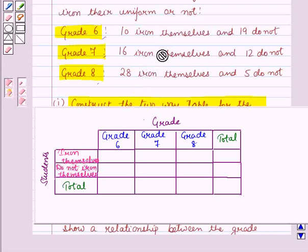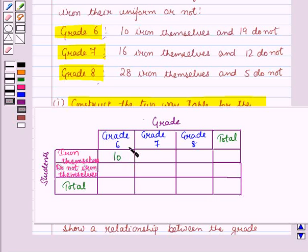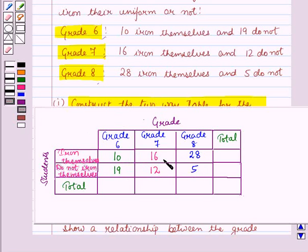Now in grade 6, 10 iron themselves and 19 do not. In grade 7, 16 iron themselves and 12 do not. And in grade 8, 28 iron themselves and 5 do not. So we have written all the frequencies.